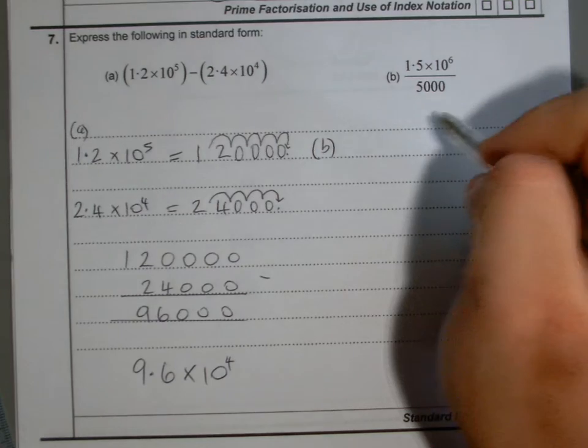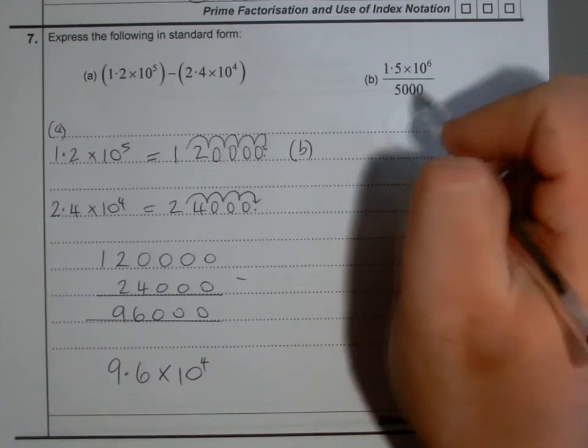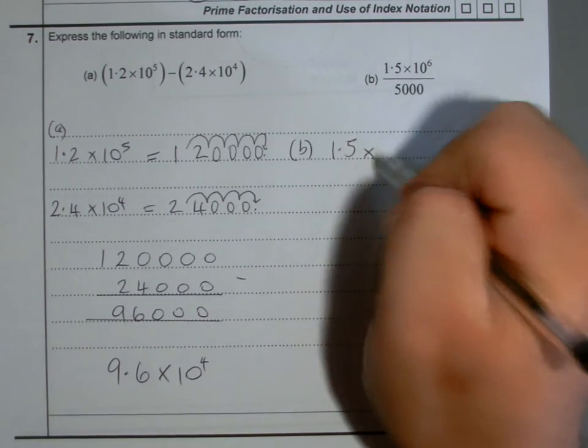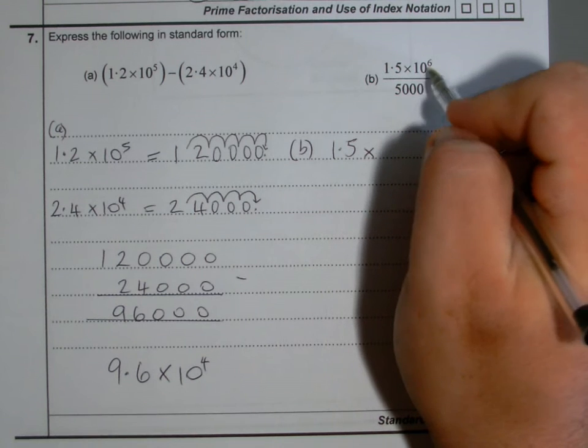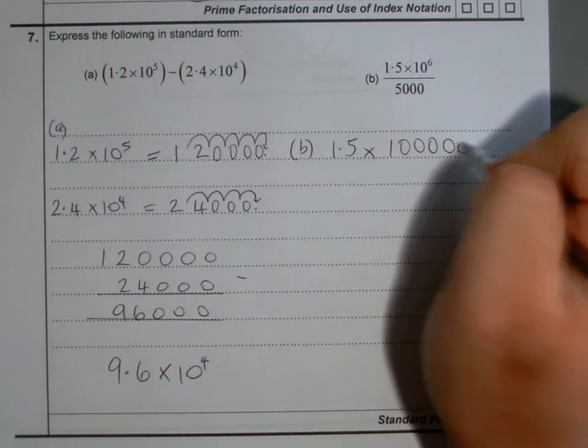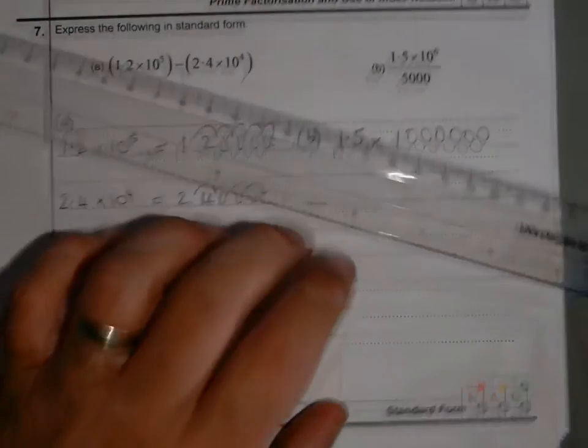There are lots of ways of doing this. What I like to do sometimes is write that out in full. Because it's 10 to the power of 6, it will be six zeros - 1 million.